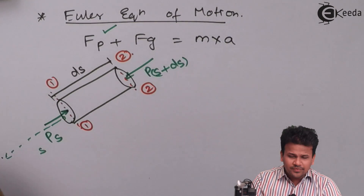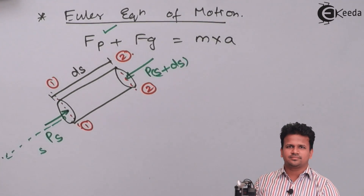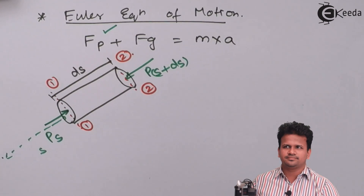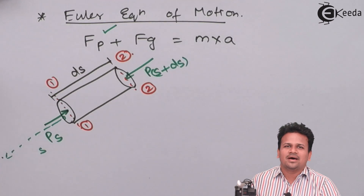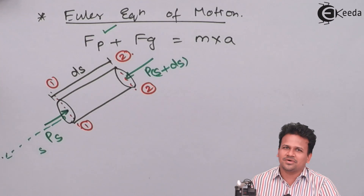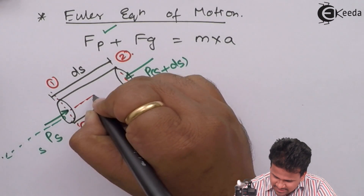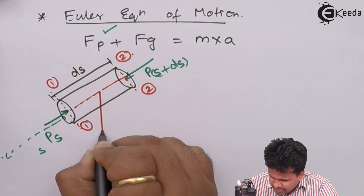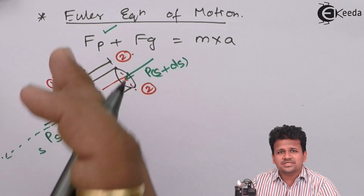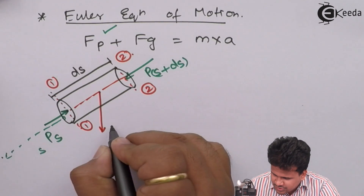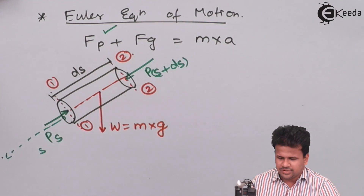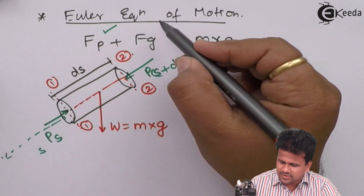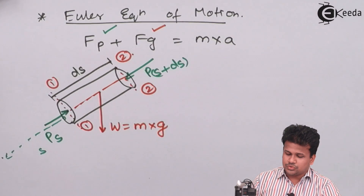Now let us consider what is the gravitational force acting on the fluid. Let us consider the center line, and at the centroid, this will be the weight of the fluid which is actually going downwards. This weight of the fluid will be equals to mass into gravitational acceleration. We have now written all the possible forces: force due to pressure and force due to gravity.